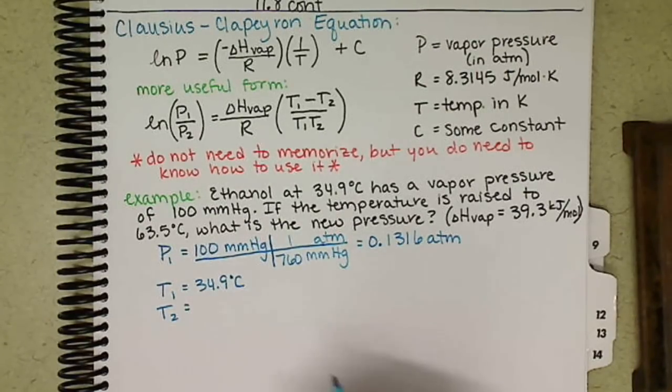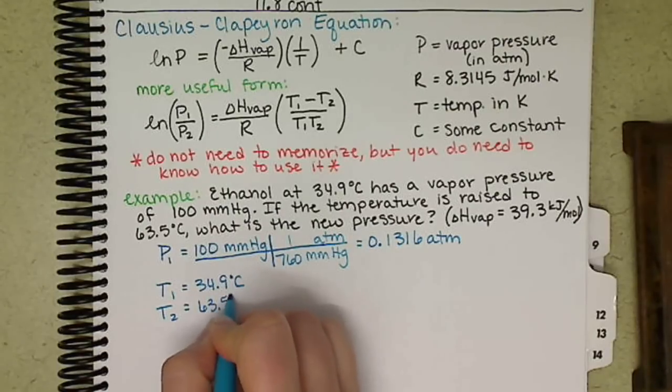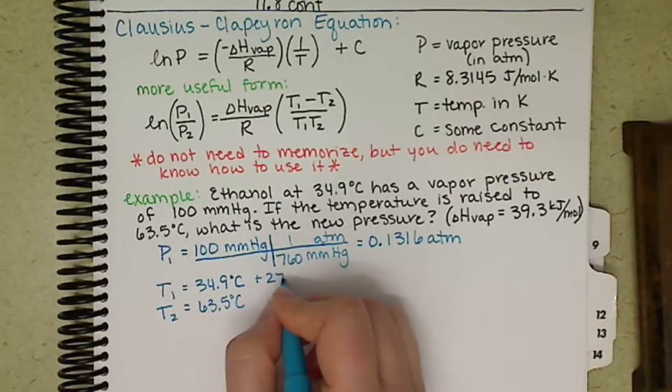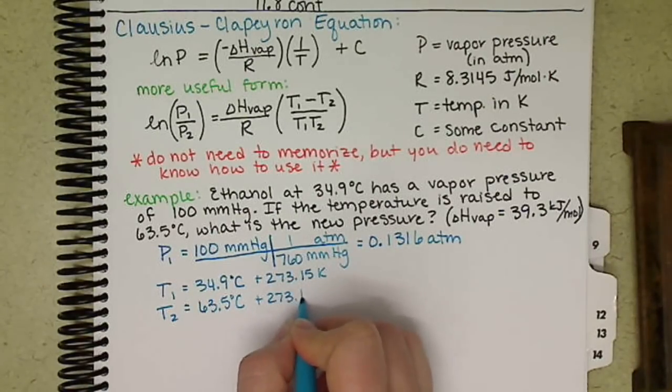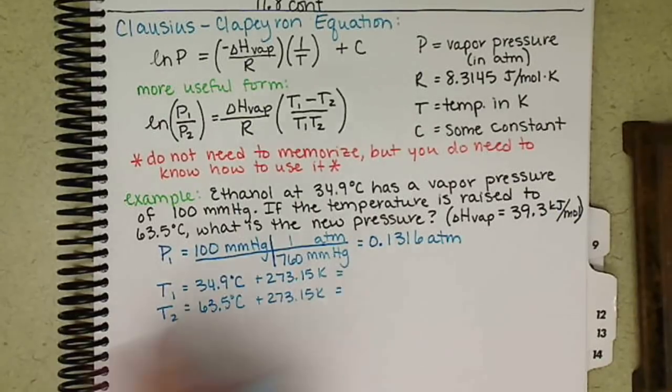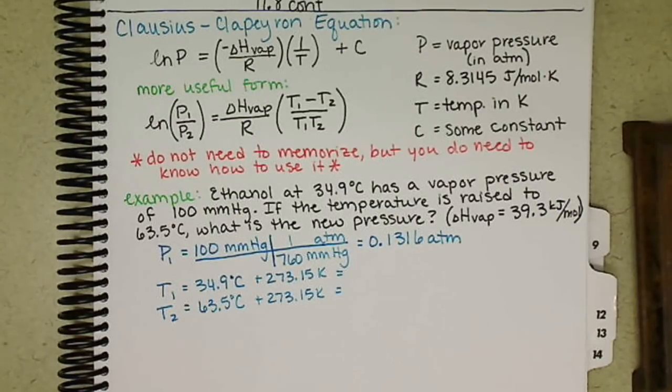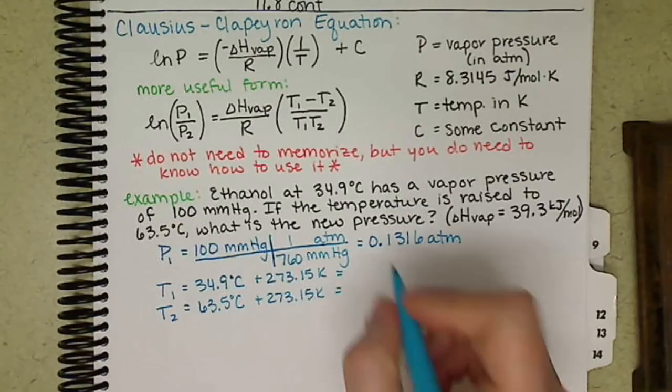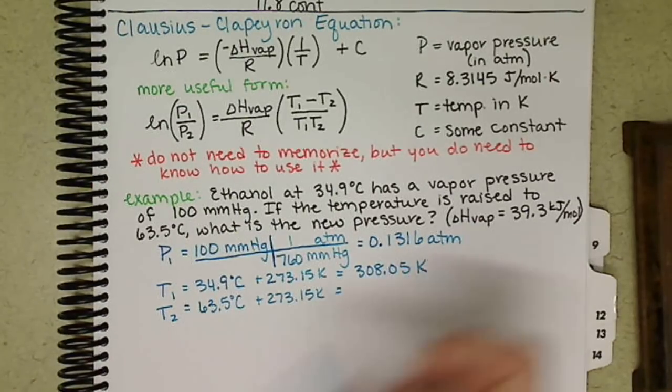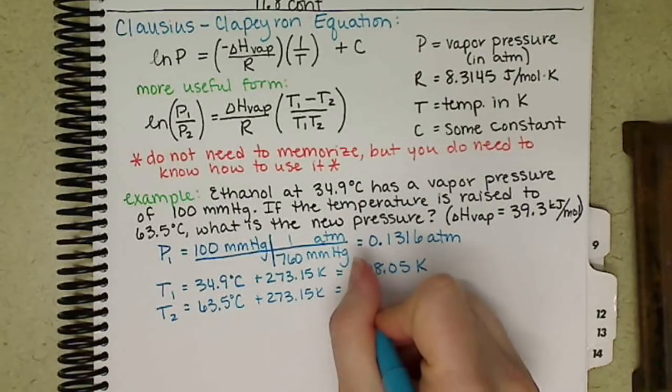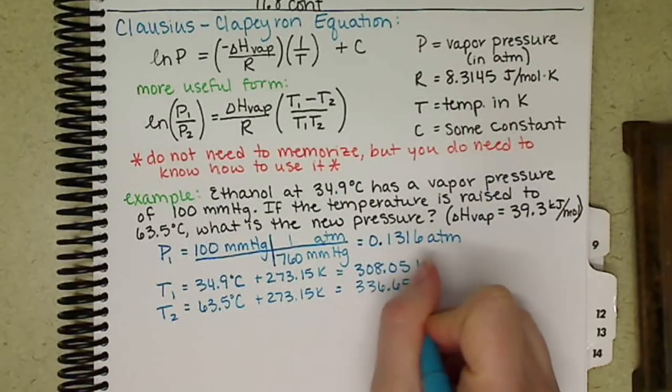T2 is 63.5. We want these both in Kelvin, so we're going to add 273.15. We get 308.05 Kelvin and 336.65 Kelvin.